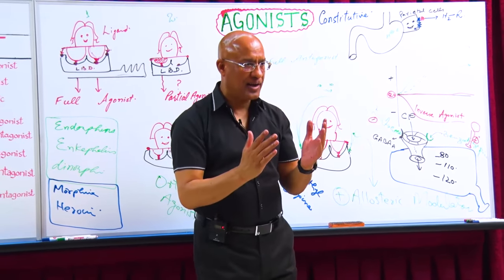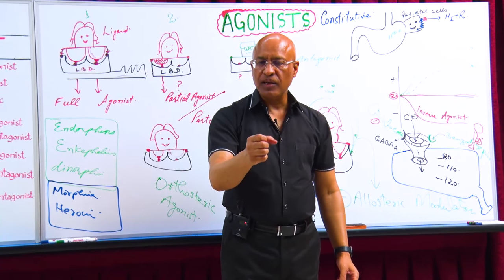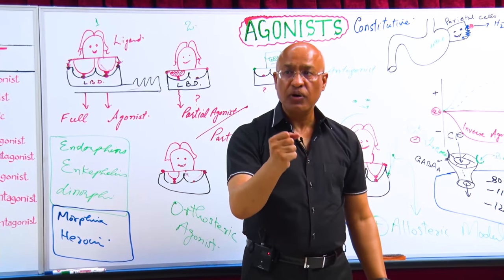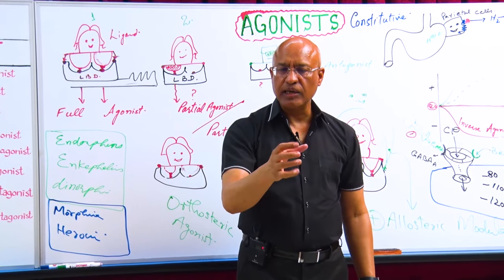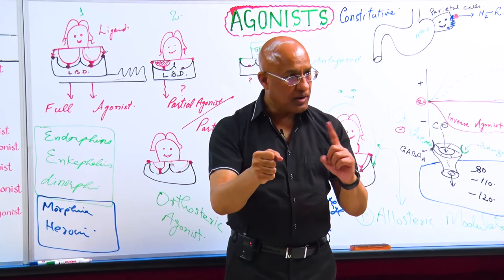So what is really happening? GABA alone, for example, the frequency is just, we're taking an example, that the frequency is 100 times opening and closing per unit of time with only GABA.